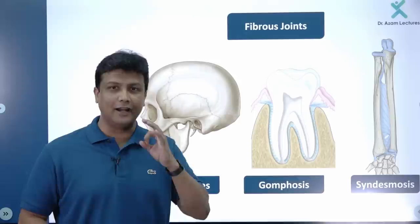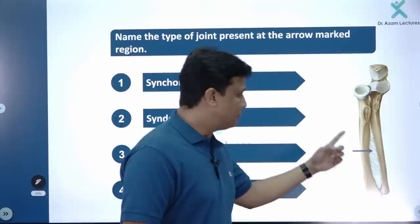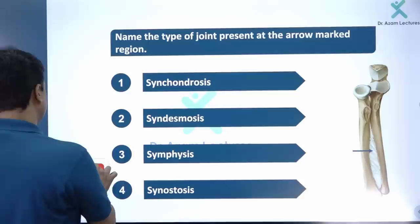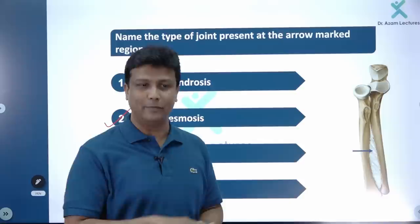To repeat: fibrous joints are of three categories — number one: sutures; number two: gomphosis; number three: syndesmosis. In this question, the arrow-marked region between the ulna and radius is nothing but syndesmosis. Forget about the superior and inferior radio-ulnar joints — those are pivot joints helping in pronation and supination. The answer here is syndesmosis.